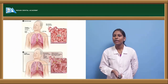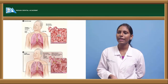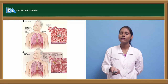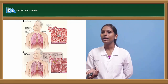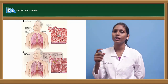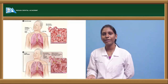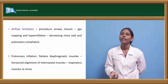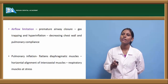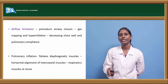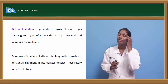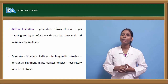This is a picture showing normal lungs and lungs with COPD. In lungs with COPD, the walls of the alveoli are being destroyed, forming fewer alveoli, resulting in decreased gaseous exchange. Airflow limitation is because of premature airway closure by gas entrapment or hyperinflation, which decreases chest wall and pulmonary compliance.